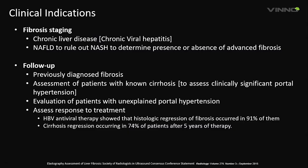The clinical requirement is fibrosis staging for chronic liver disease due to chronic viral hepatitis and in NAFLD. The objective is to rule out NASH, determine presence or absence of advanced fibrosis, follow up previously diagnosed fibrosis, assess patients with known cirrhosis for clinically significant portal hypertension, evaluate patients with unexplained portal hypertension, and assess response to treatment — such as persons who have received antiviral therapy for hepatitis B, showing histologic regression of fibrosis, or cirrhotic patients showing histologic regression after five years of therapy.